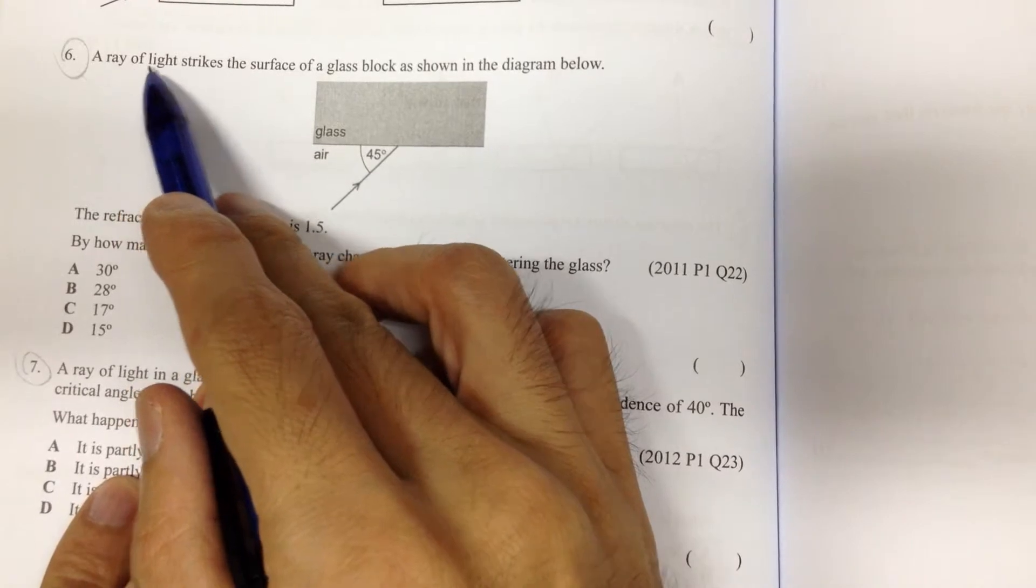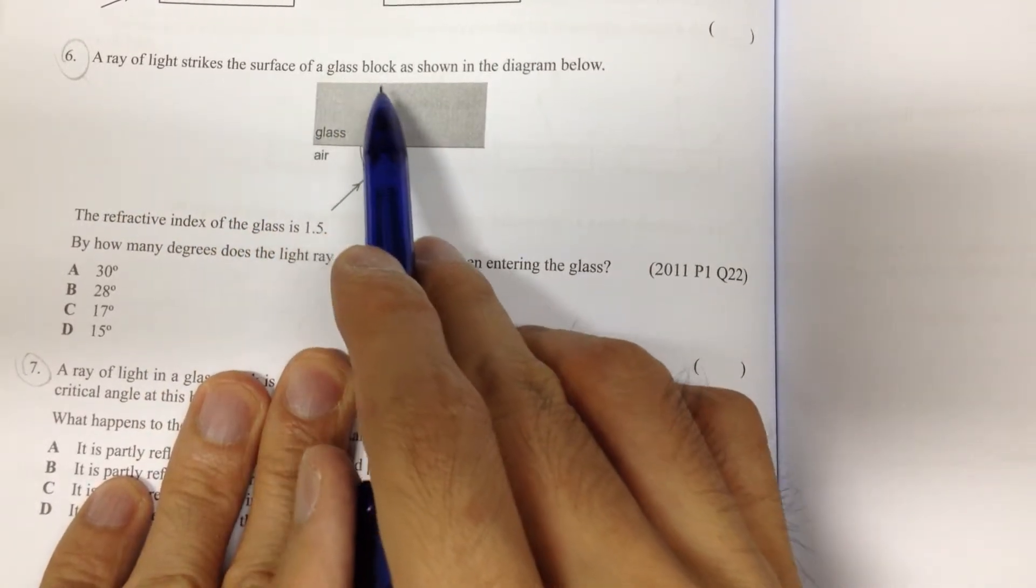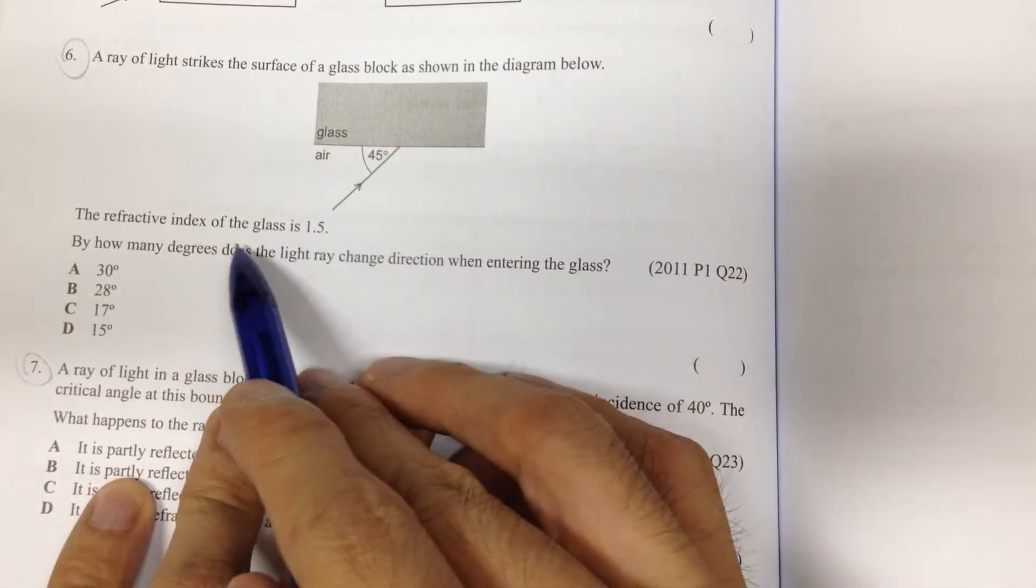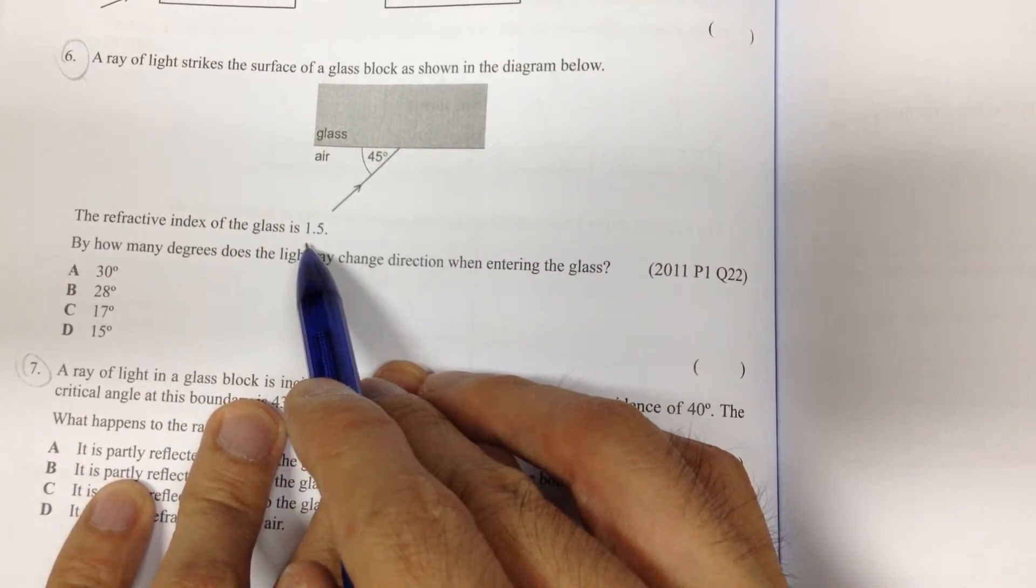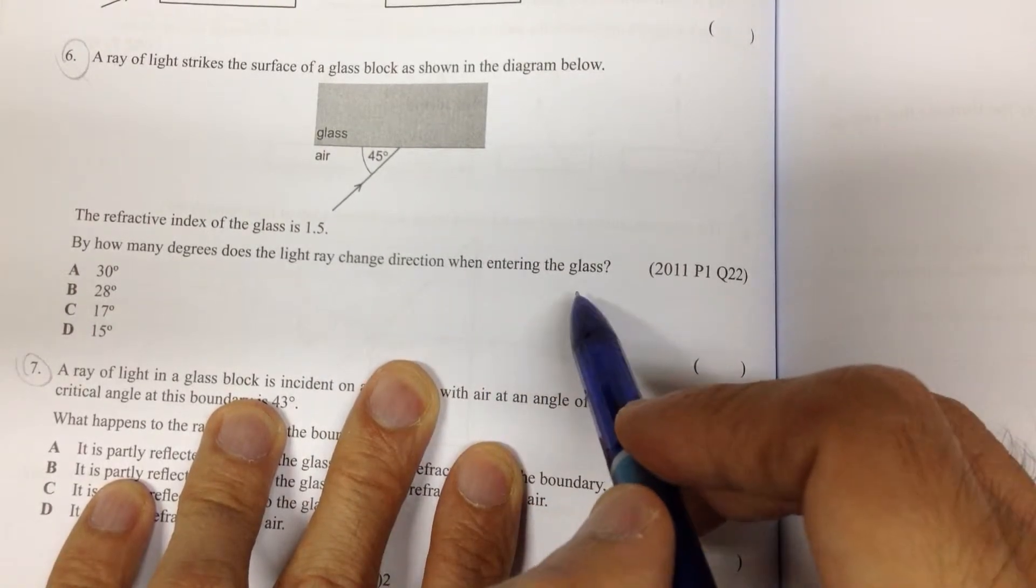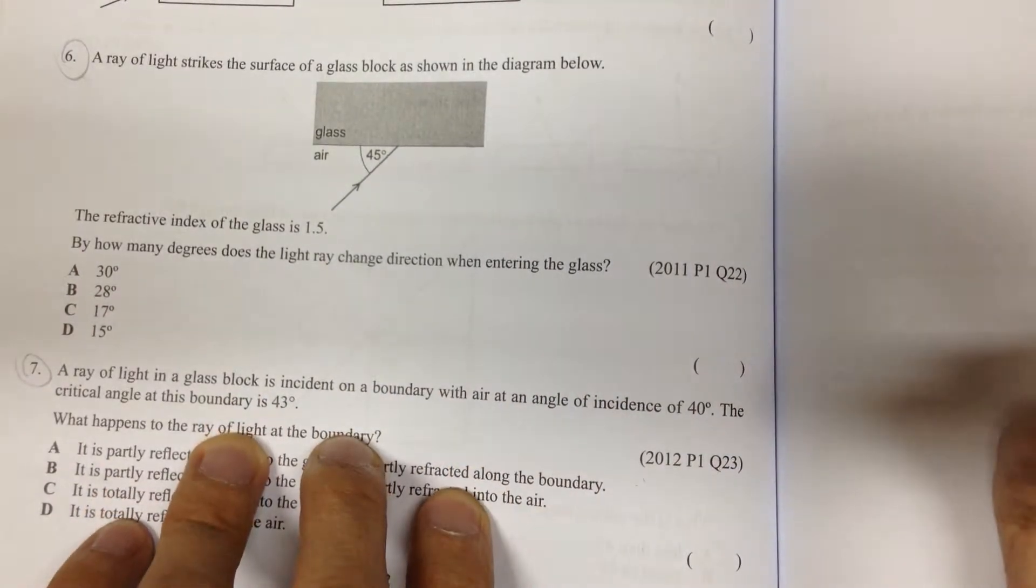let's read the question first. The light ray strikes the surface of a glass block as shown in the diagram below. The refractive index of the glass block is 1.5. By how many degrees does the light ray change direction when it enters the glass? Okay, so that's the question.